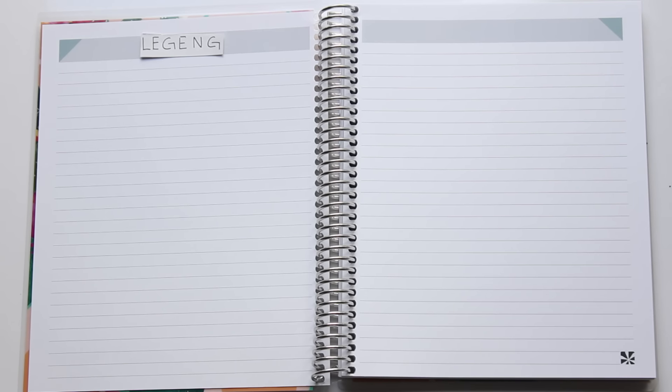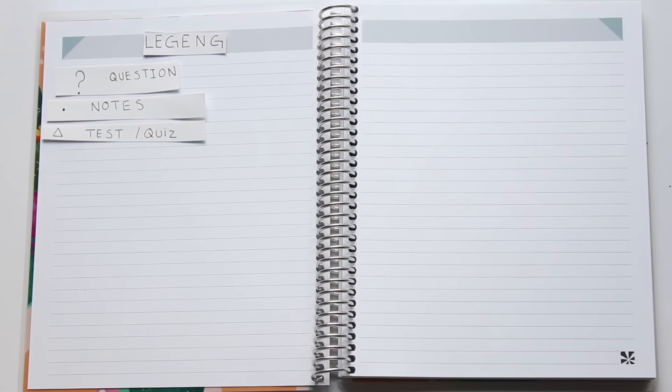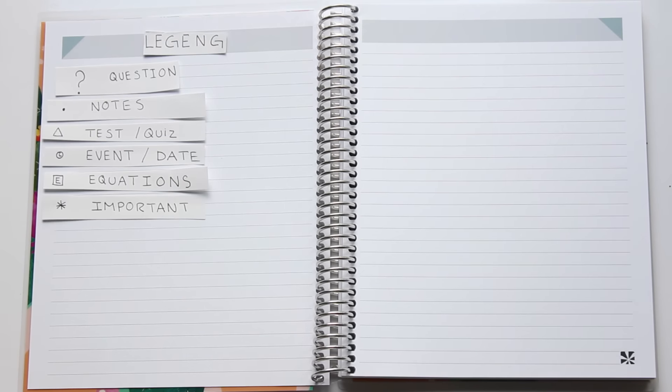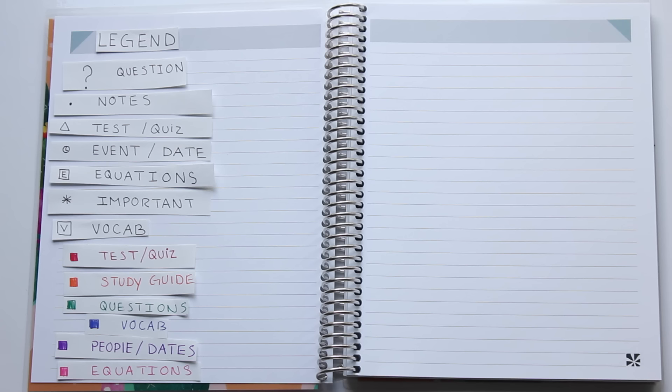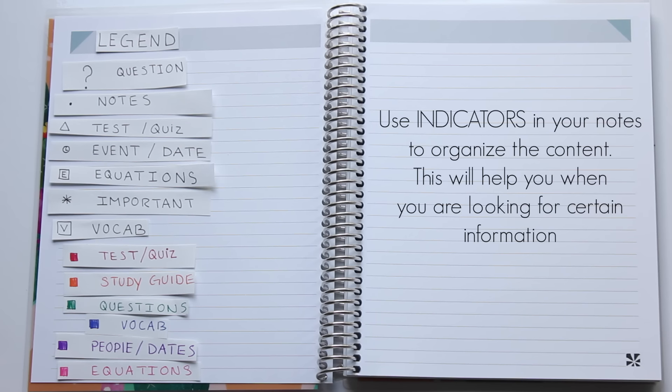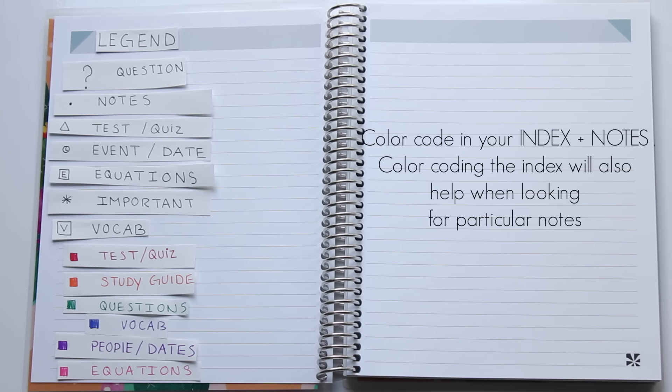Let's set up our bullet journal for school. You're first going to need a legend where your indicators will go. This will help you organize everything that you're taking down in class so that it's very easy to go back and study. As you can see here, I have all of my indicators for each class. The color code system will make much more sense as I explain how the index system works.